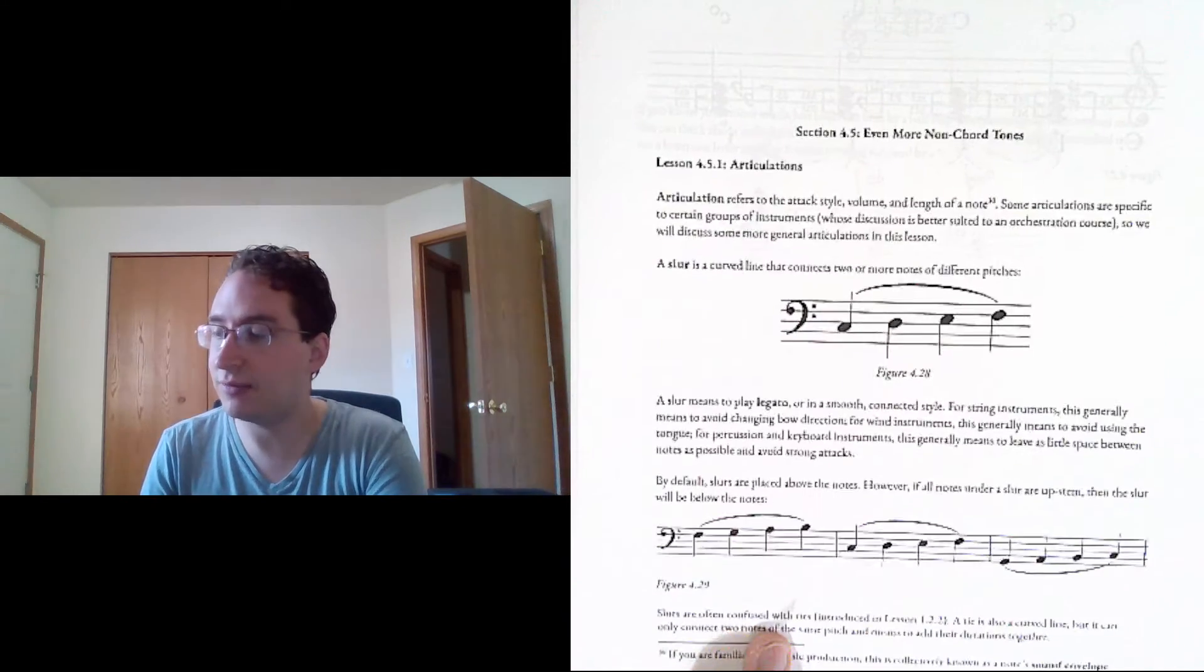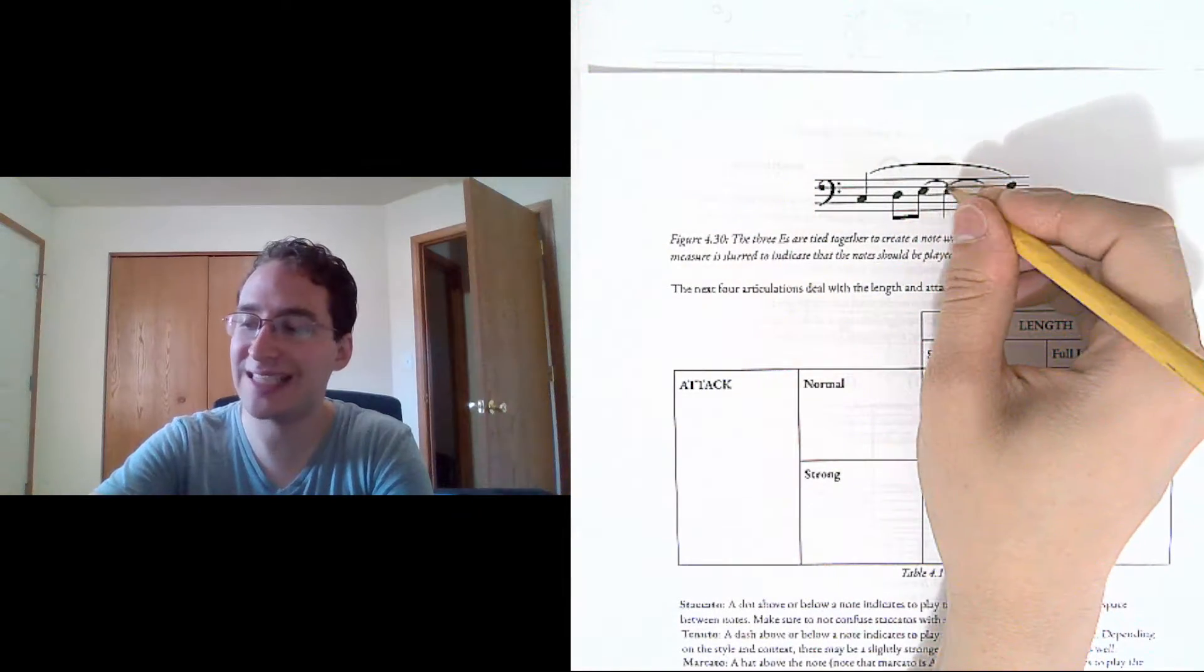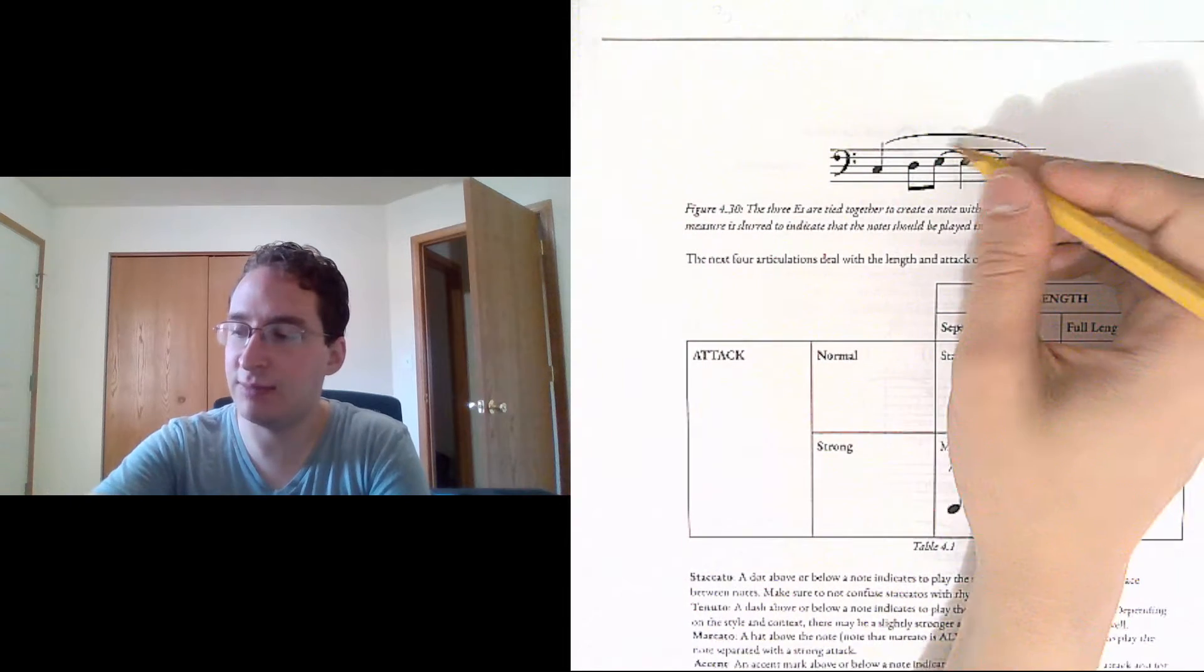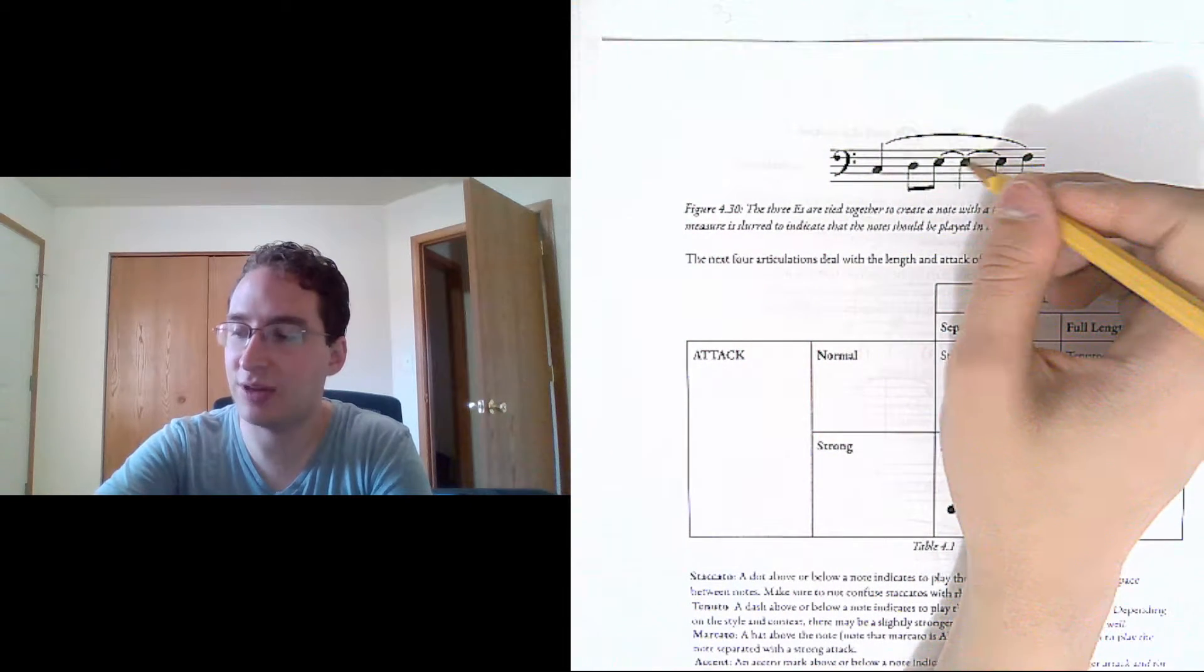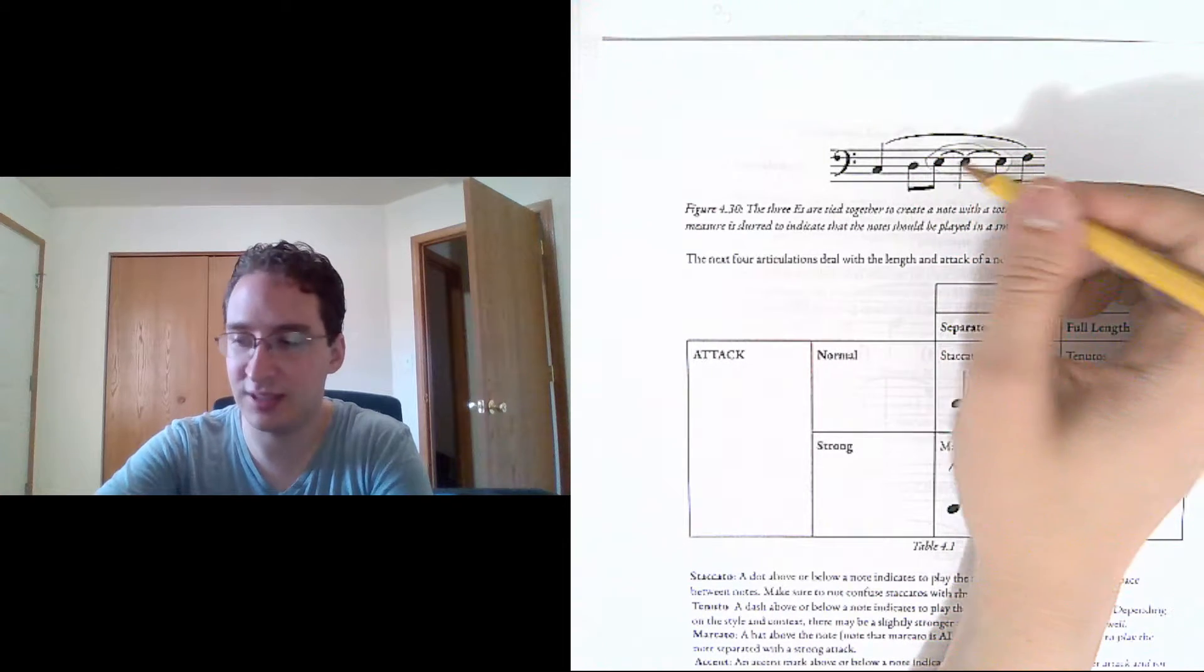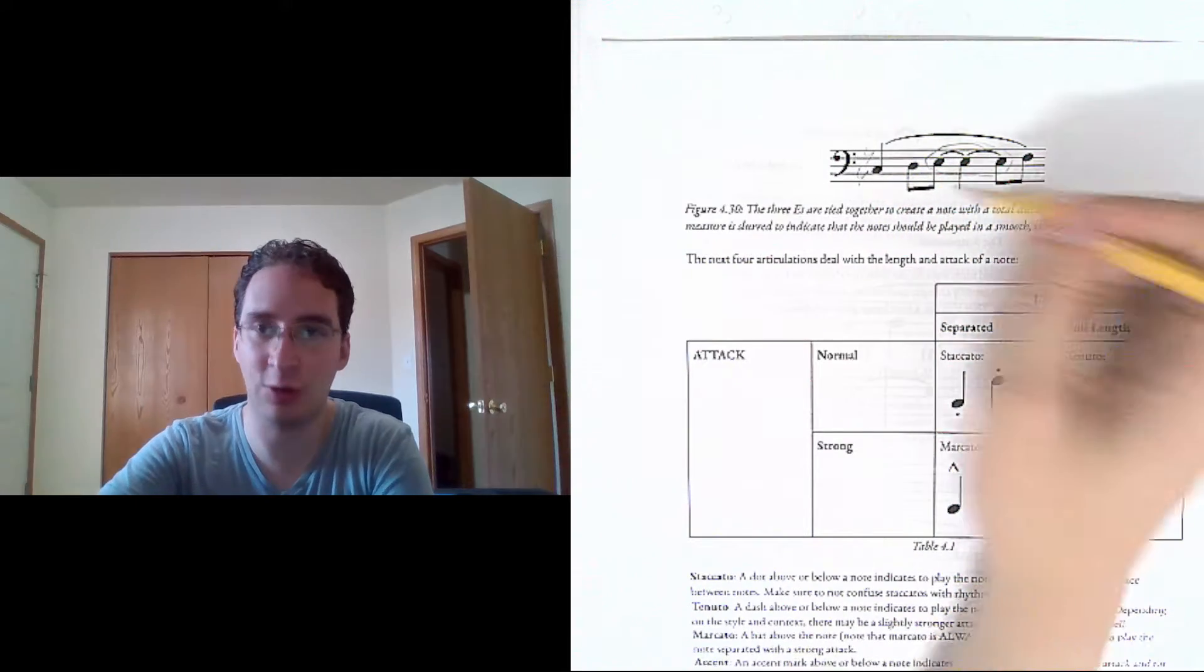Slurs can often be confused with ties. Remember that a tie is also a curved line, but it connects exactly two notes of the same pitch. And it means something completely different. It means to just create one note that has the added duration. In this case, one-half plus one plus one-half, assuming we're in four-four and taking a quarter note beat.